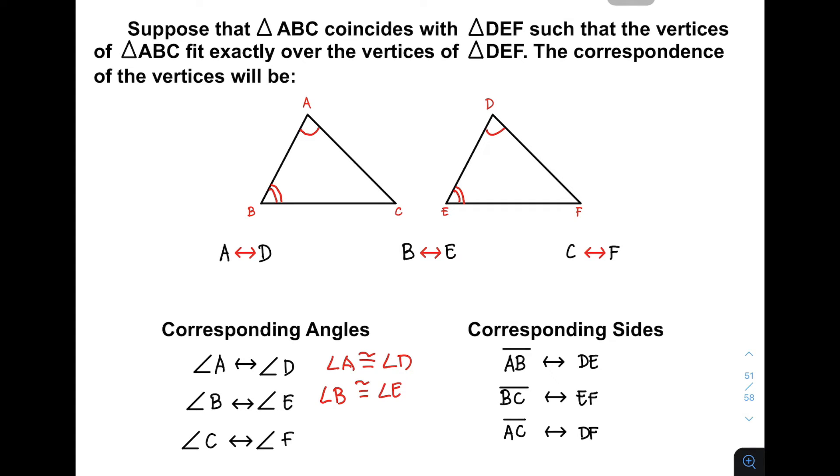And if angle C corresponds to angle F, I'll be using three arcs for angle C and angle F, and they are congruent. These are the three corresponding angles and three pairs of congruent angles in these two triangles. So let's show you the corresponding sides.